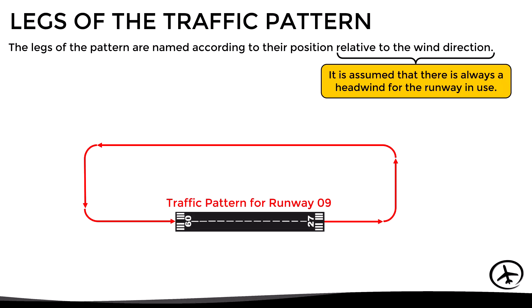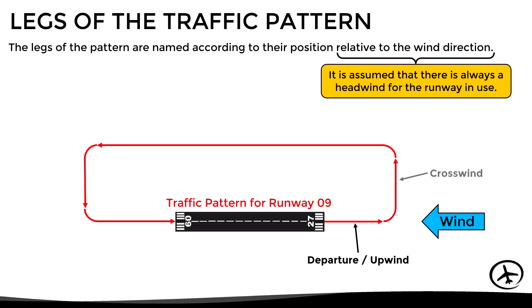So according to this, if we analyze the legs of the pattern for runway 09, we assume a direct headwind for this runway. The first leg after takeoff is known as the departure leg, or in some cases the upwind leg. Then we have the crosswind leg, the downwind leg, the base leg, and finally the final leg, which basically coincides with the approach path of the runway in use.